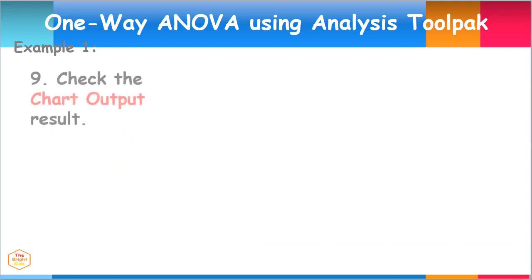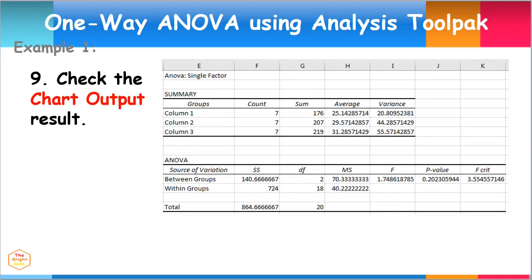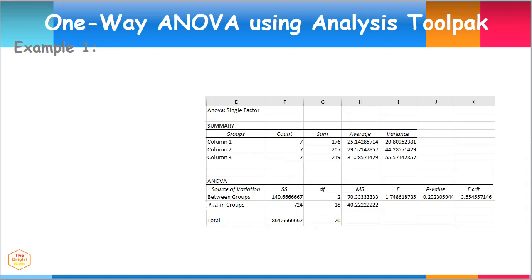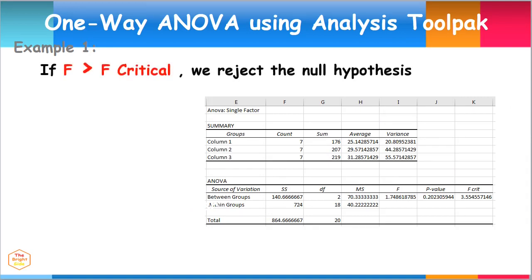Check out the chart output results for the single factor ANOVA. Here we are provided the mean and variances for both variables. Also, there are results for the F value, F critical, and P value. The decision rule is: if the F value is greater than F critical, we reject the null hypothesis.